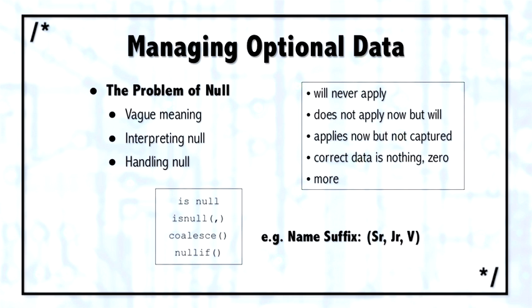First off, let's talk about what optional data is. If you think of the name suffix type of column, where you would normally put a junior or a senior, or John Smith III, that's a column that will be easily understood as an optional data column — very few people will need something there, but you have to have it. Another good example would be an address line 2, where most rows won't have an address 2, but for those that do, you have to have some place to put it.